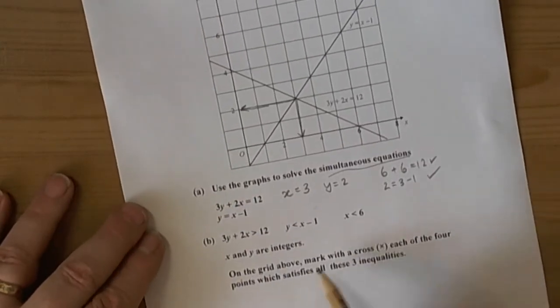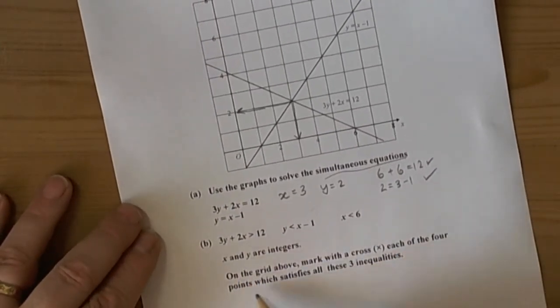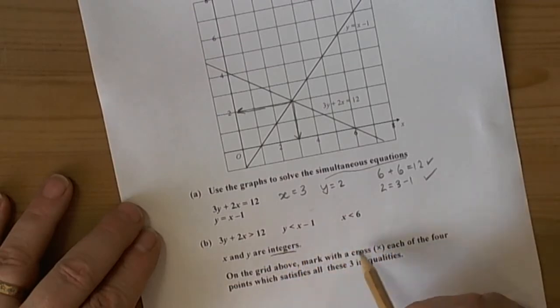The second part asks us to identify four points which satisfy three inequalities. x and y are integers, which means whole numbers, and we need to show these three inequalities on the graph.